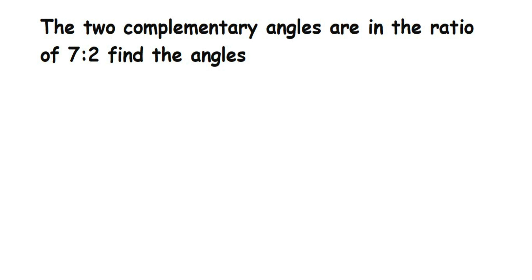Hey everyone, here's a question on angles. The question is: the two complementary angles are in the ratio 7:2, find the angles. Now what are complementary angles? If you have learned this, there are two different types of angles: complementary and supplementary. Complementary means when you add two angles, the sum should be equal to 90 degrees.